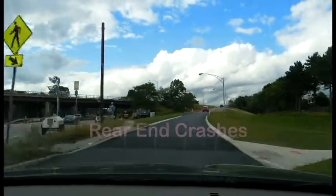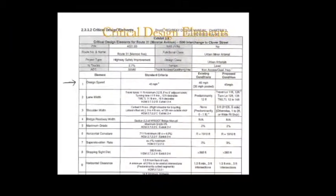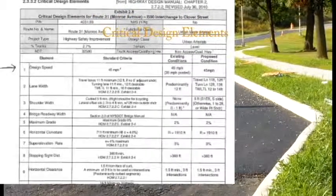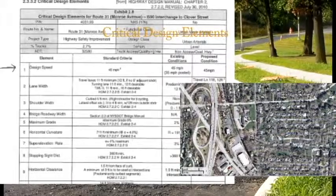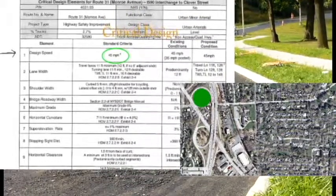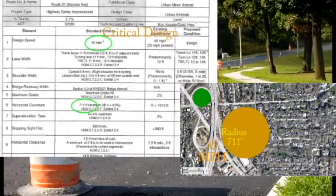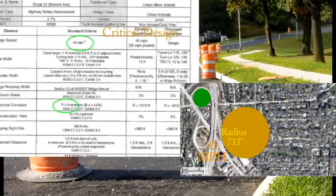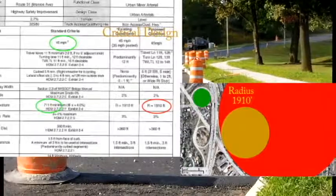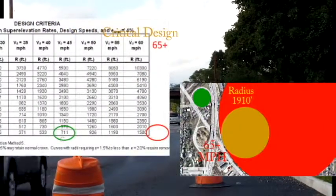Within the New York State DOT project documents is the following information. Section 2.3.3.2, Critical Design Elements, Design Speed: the design speed standard criterion is 45 miles per hour, and both the existing condition and the proposed condition are also 45 miles per hour. The minimum radius for 45 miles per hour is 711 feet. However, the existing and proposed radius is 1,910 feet, which corresponds to a design speed in excess of 65 miles per hour.